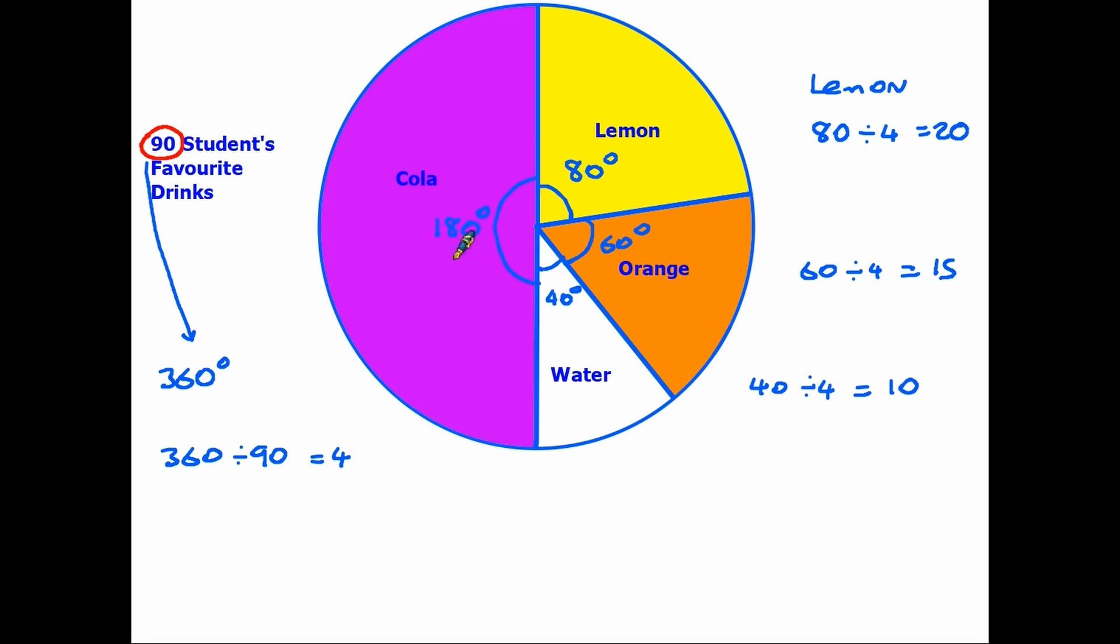40, 180 divided by 4 for the water—that would be 10 students. And 180 divided by 4 for the cola would be 45 students, which makes sense because we can see cola is half. Half of 90 is 45. You can always check your answer by adding them. So we've broken down from degrees into actual numbers. Again, you can only do this if you know the number of people or the number of items in the survey, and that enables you to make this calculation. Otherwise, you are just looking at the representation in degrees.